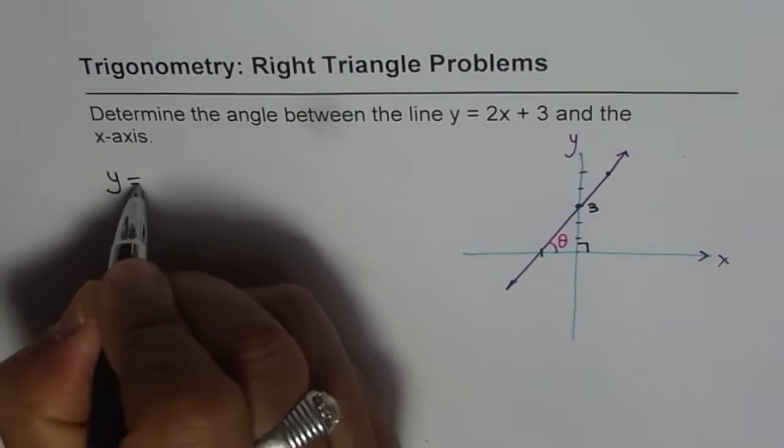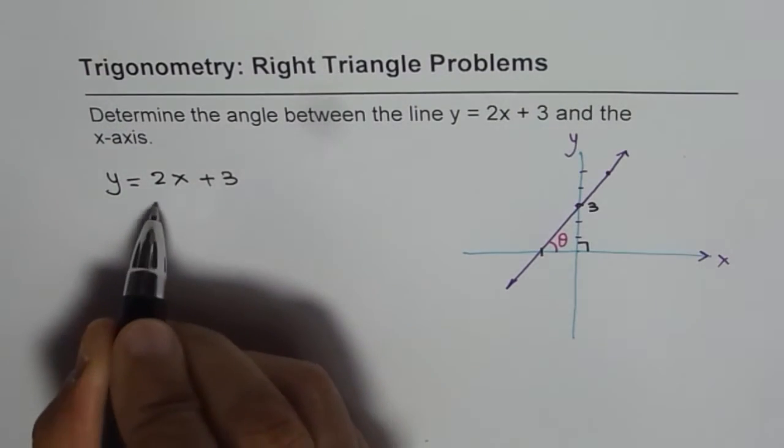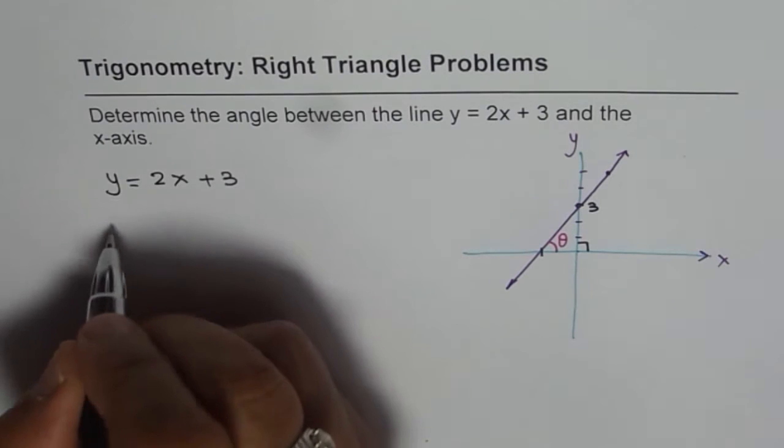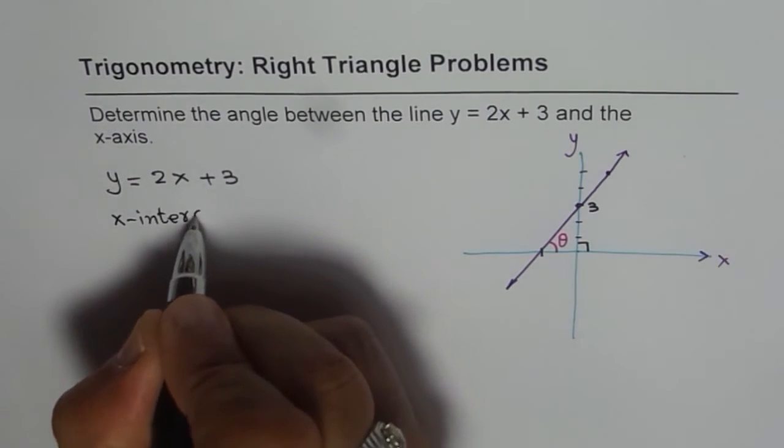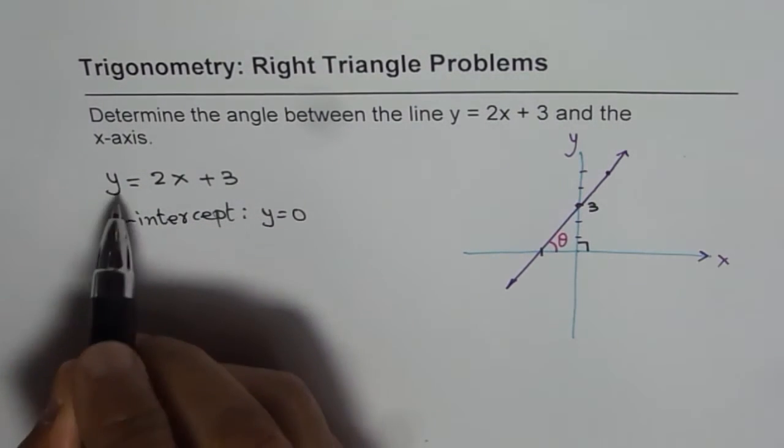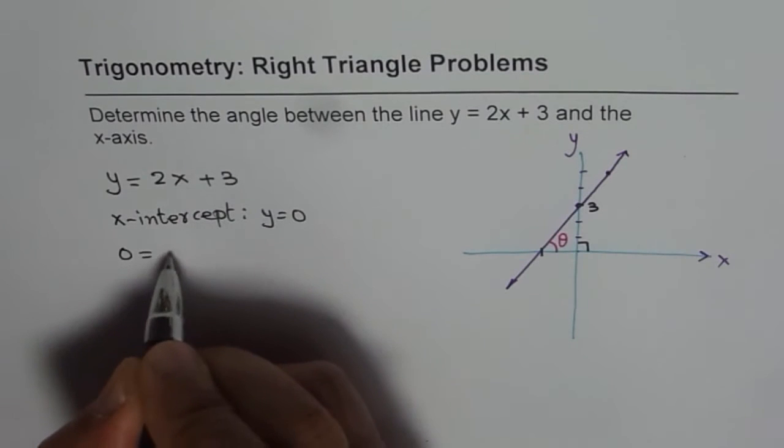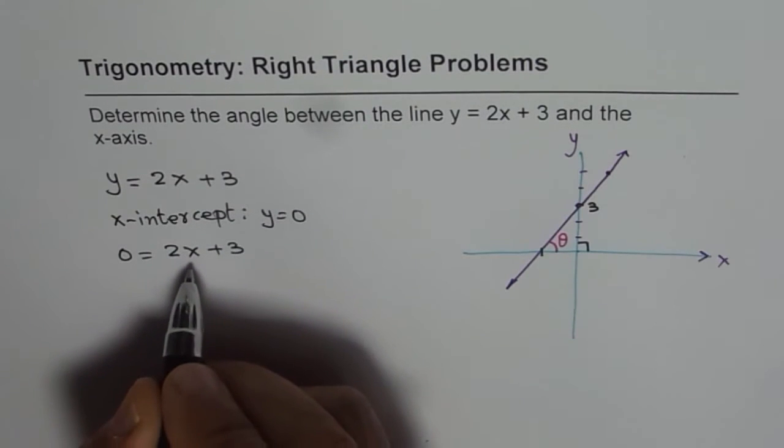So we have the line y equals 2x plus 3. To find x-intercept, at x-intercept, you know y is 0. So for x-intercept, y equals 0. If I substitute 0 here, I get 0 equals 2x plus 3.